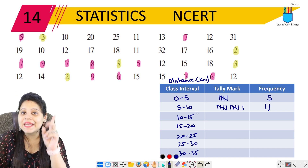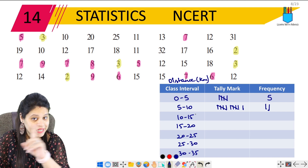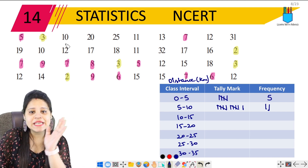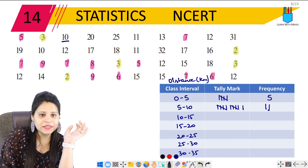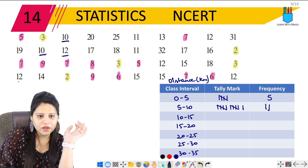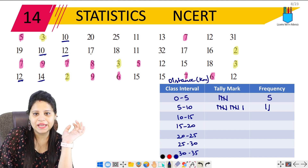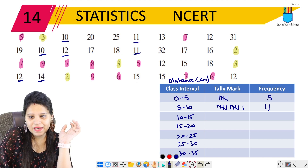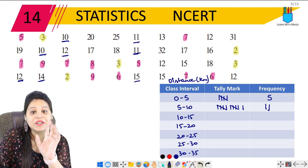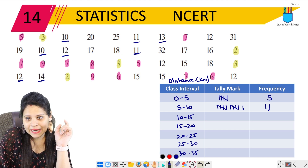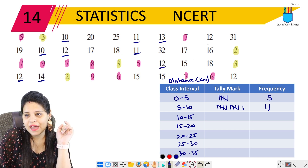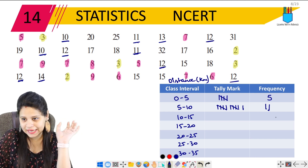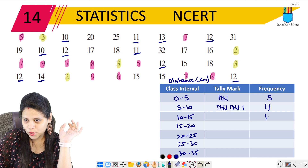Next is 10 to 15, where 10 is included and 15 is not. Counting through: 1, 2, 3, 4, 5 — and continuing — 6, 7, 8, 9, 10, 11. So the frequency for 10 to 15 is also 11.